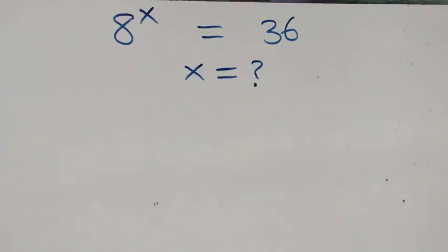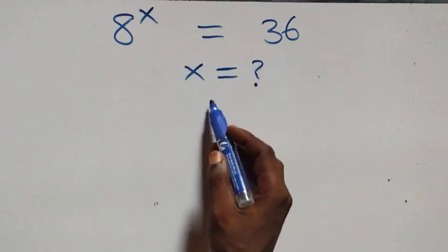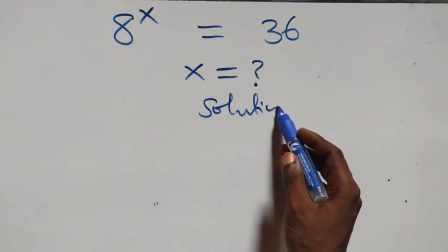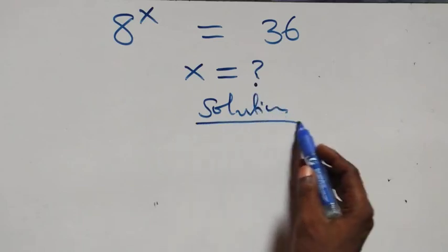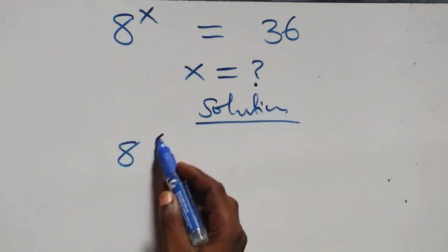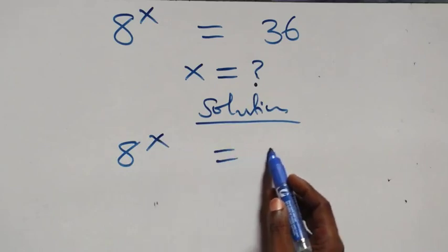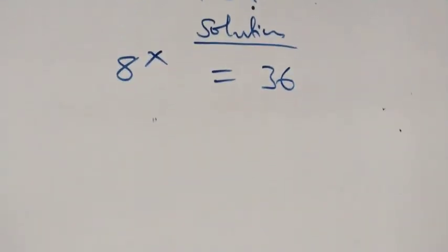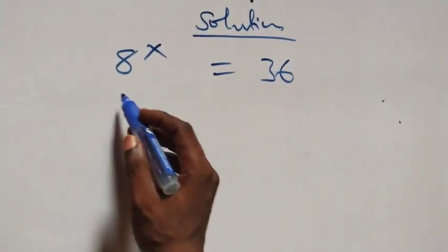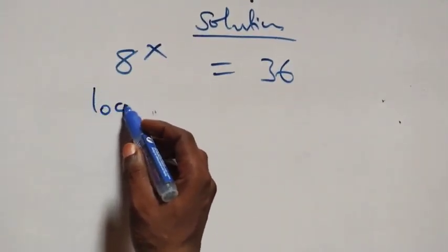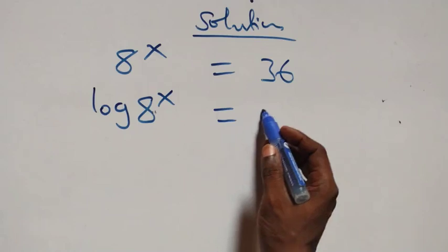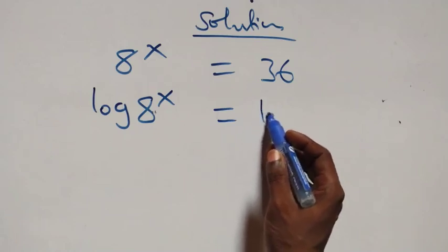Hello. How to solve this nice exponential equation? Solution from here. What we have here is a raised to power x equals to 36. From here we take the log on both sides. We have log a raised to power x equals to log 36.